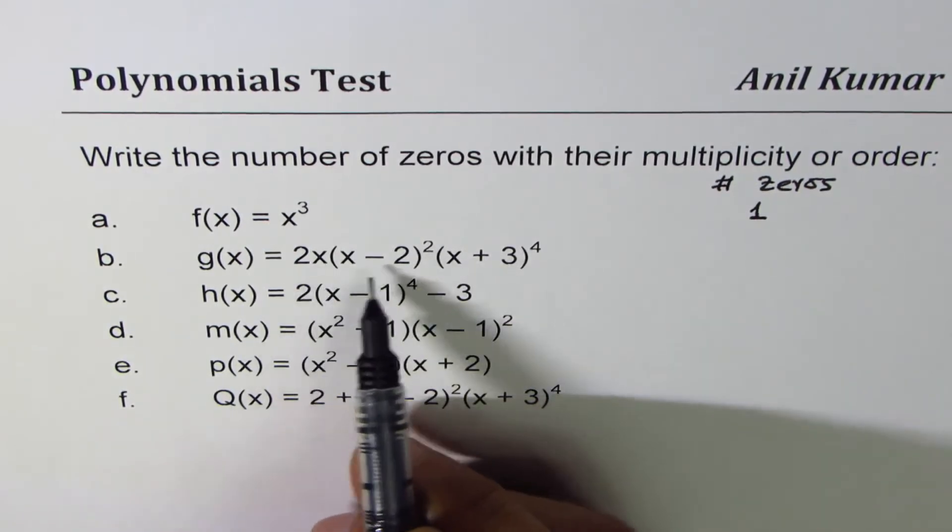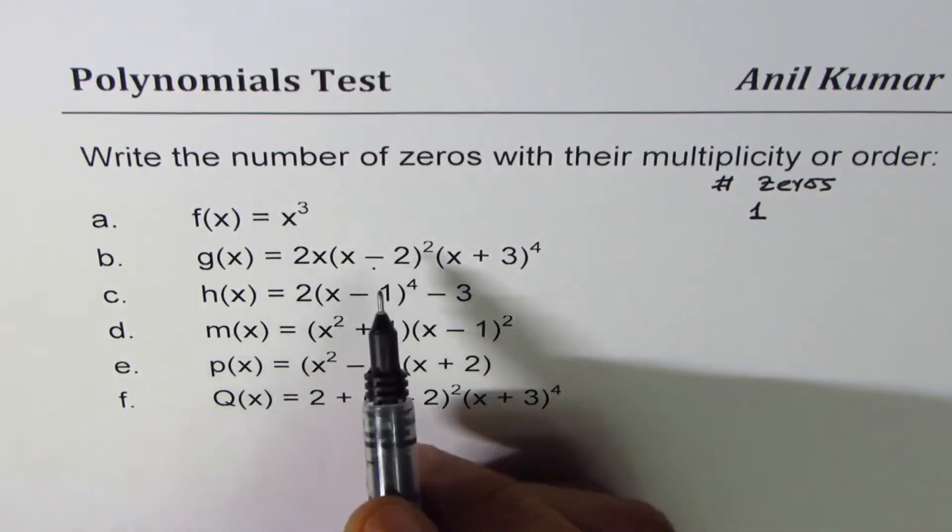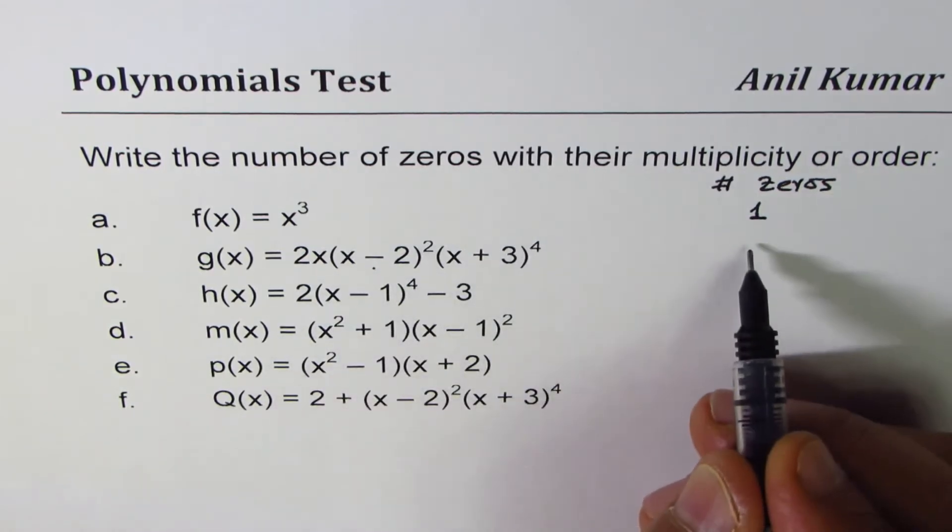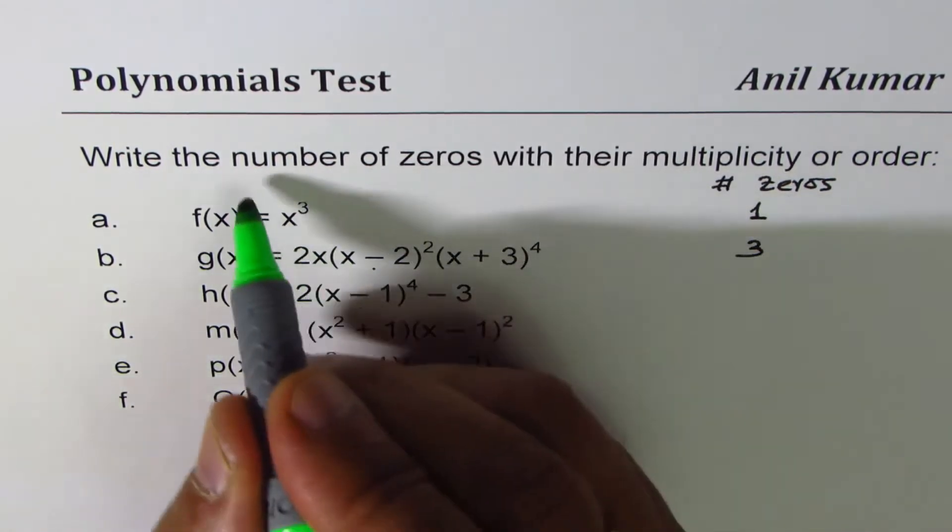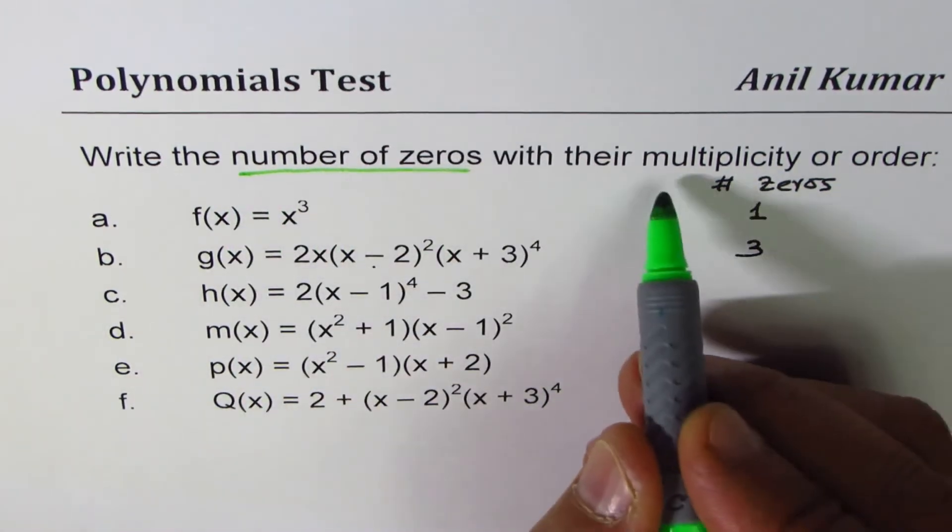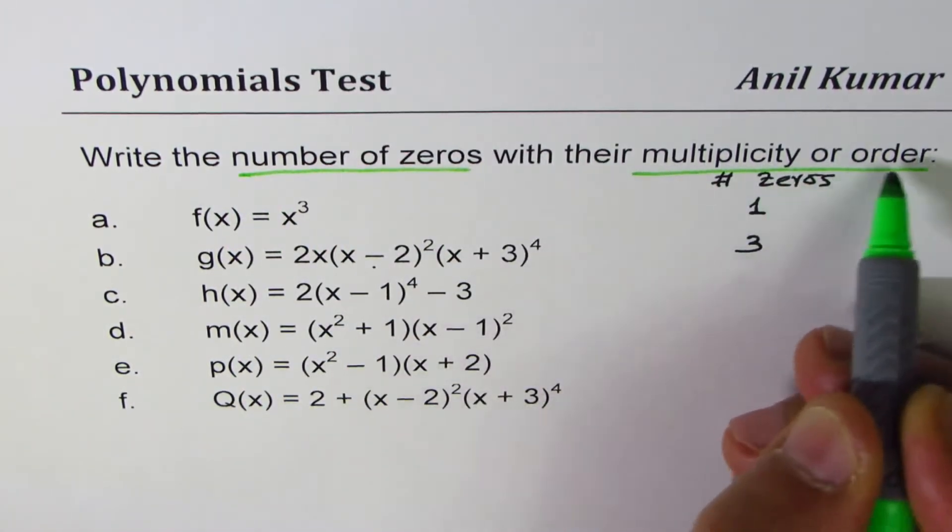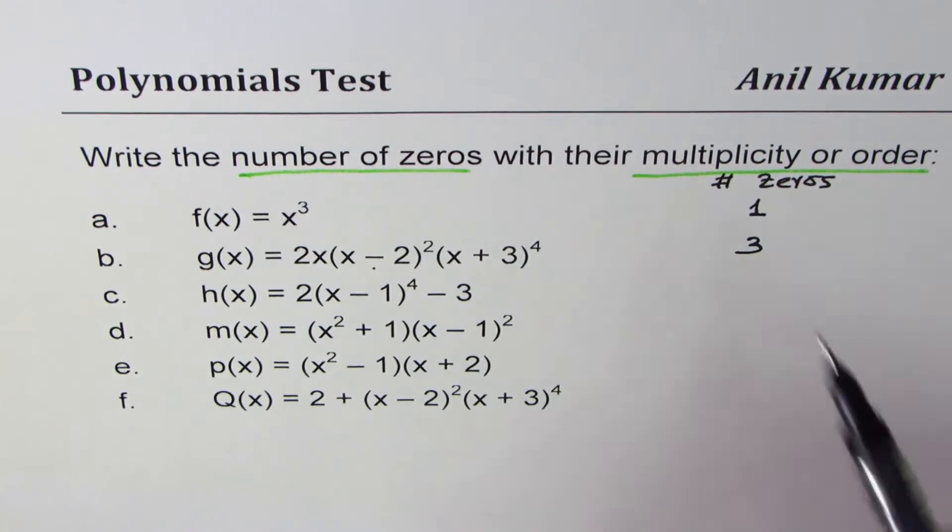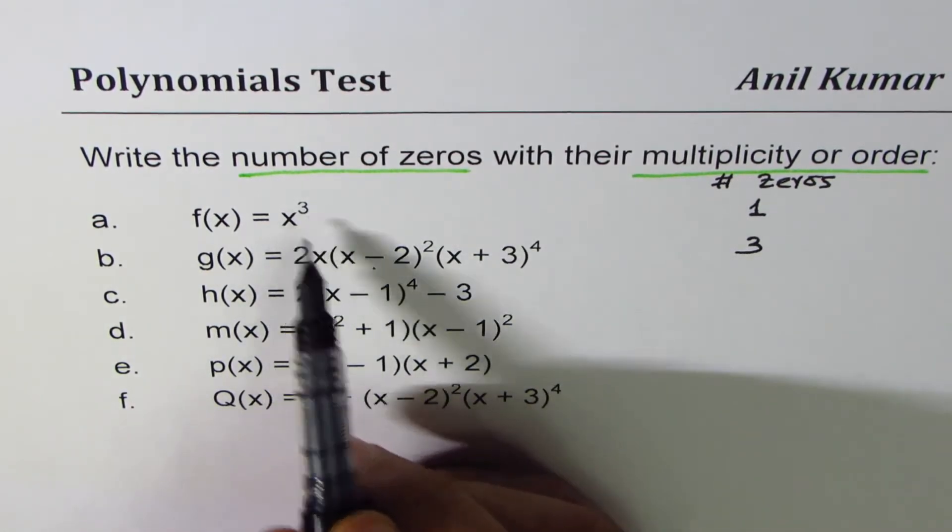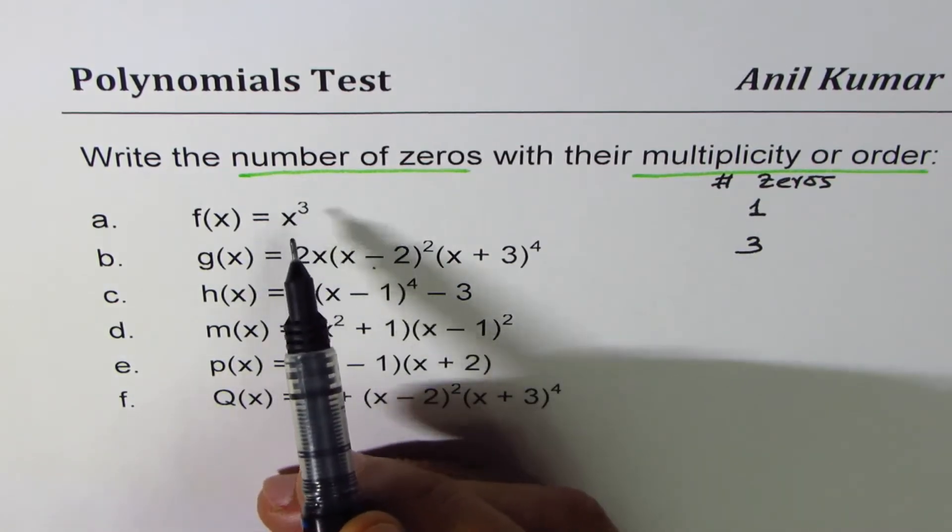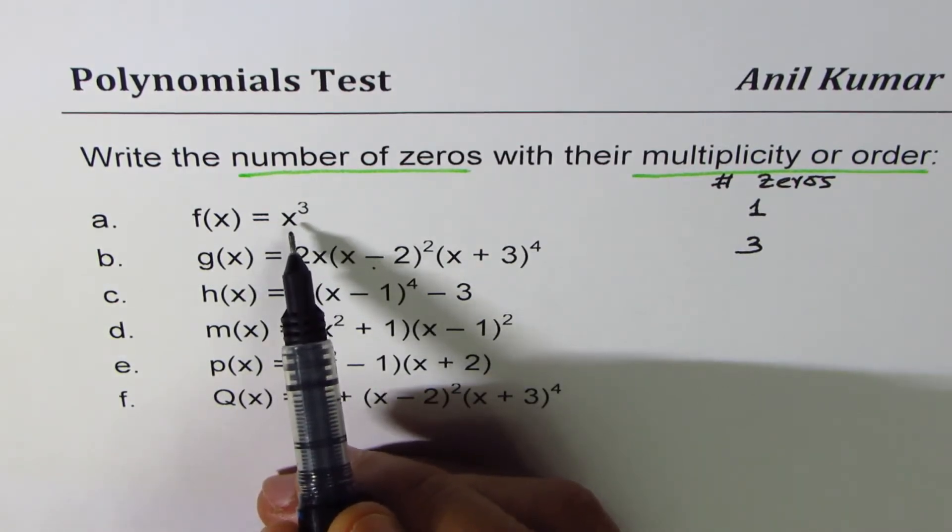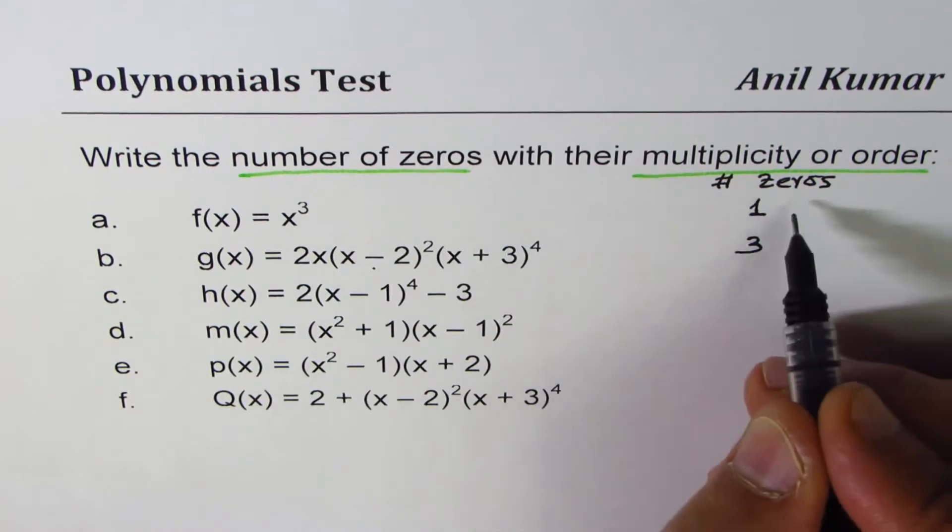Here we have one, two, three factors so the number of zeros will be three. You will see that I really want number of zeros along with their multiplicity or order. Now what does that mean? In the first case we have one zero, however its order is three. There are three zeros effectively at x = 0, so we'll see its multiplicity is three.